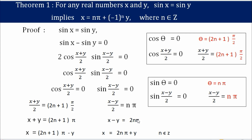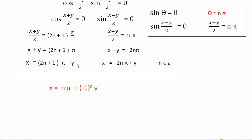Comparing the two results for x: in the first case pi is accompanied by 2n+1, and in the second case by 2n. Instead of writing 2n and 2n+1 separately, we can generalize to n pi. We also have y in both, but the term minus 1 whole raised to n is missing.